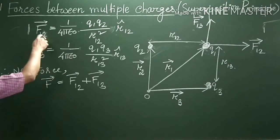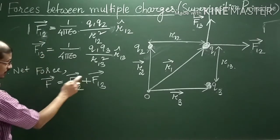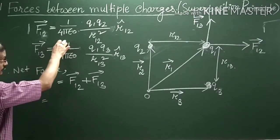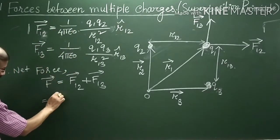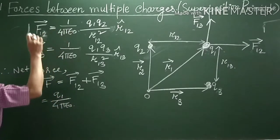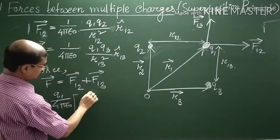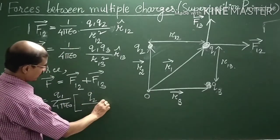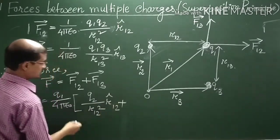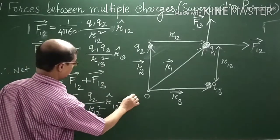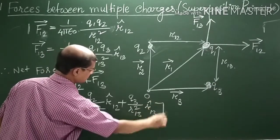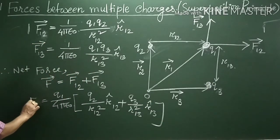Now if you put the values of F12 and F13 here, you take Q1 by 4πε₀ common. So you get Q1 by 4πε₀ times bracket: Q2 by R12 square into R cap 12 plus Q3 by R13 square R cap 13. This is the net force on the charge Q1.